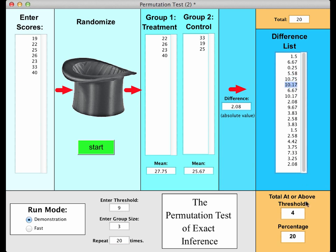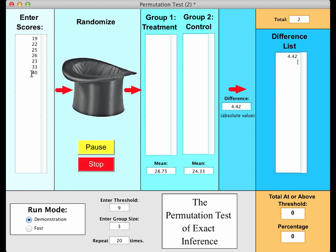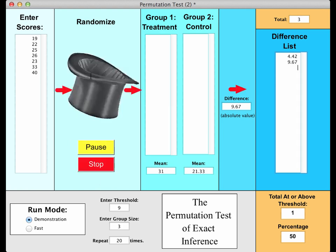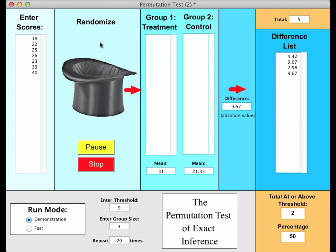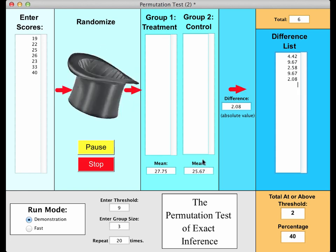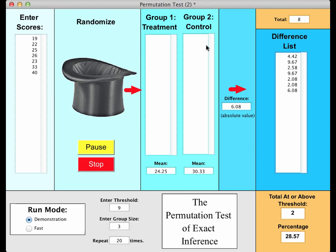What's going on here is it's taking the scores and putting them into the hat and shaking the hat, which is trying to symbolize randomizing the scores. It then takes the random numbers and puts them into the two groups. At random, it takes out the numbers and puts the first three in the control group and the remaining four in the treatment group. It then computes the means, the difference between the means, and puts that score in this difference list. That was a total of 20 loops or cycles. We had actually four of the scores that were above nine. Four out of 20 would be a percentage of 20 percent, so much higher than we saw in the video.